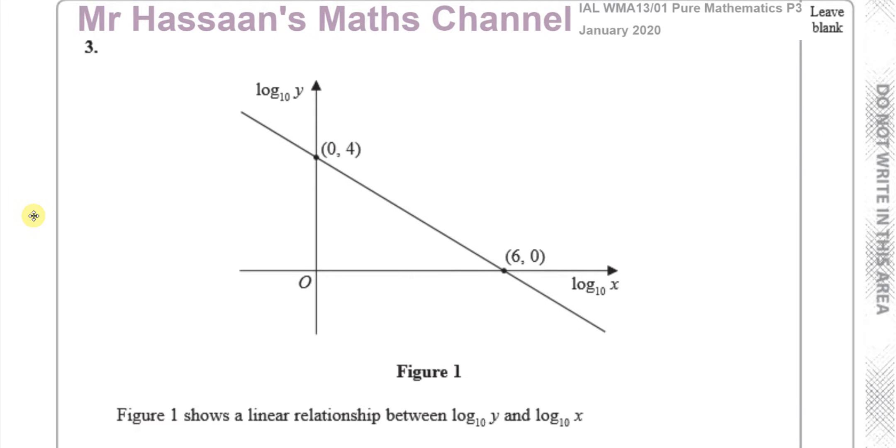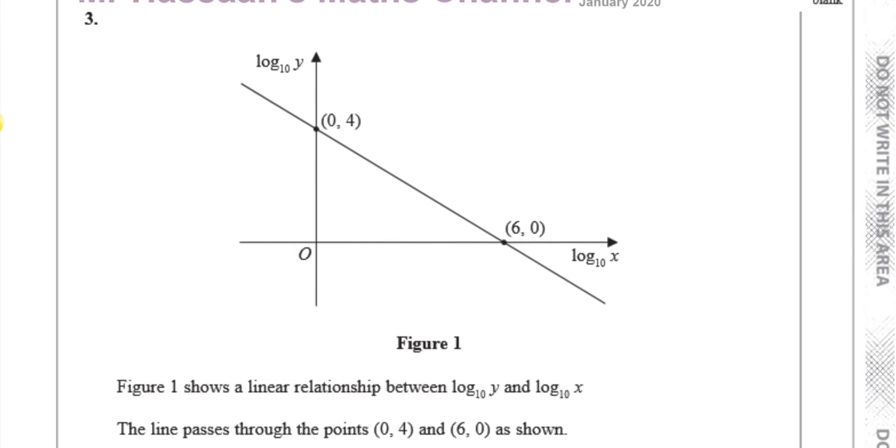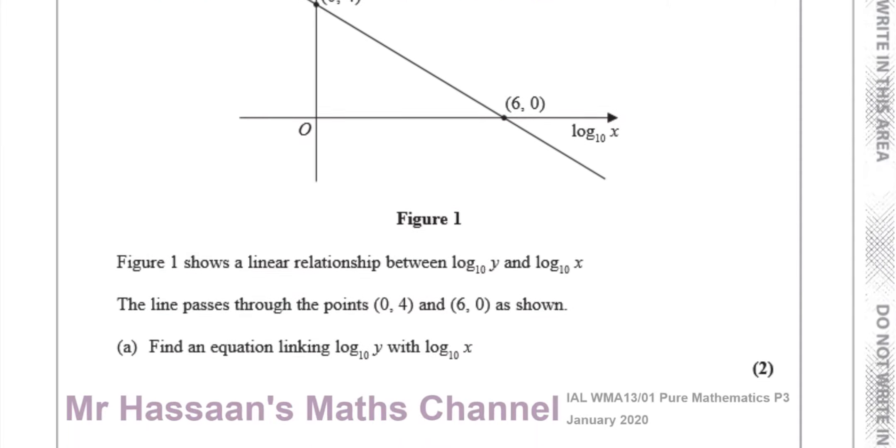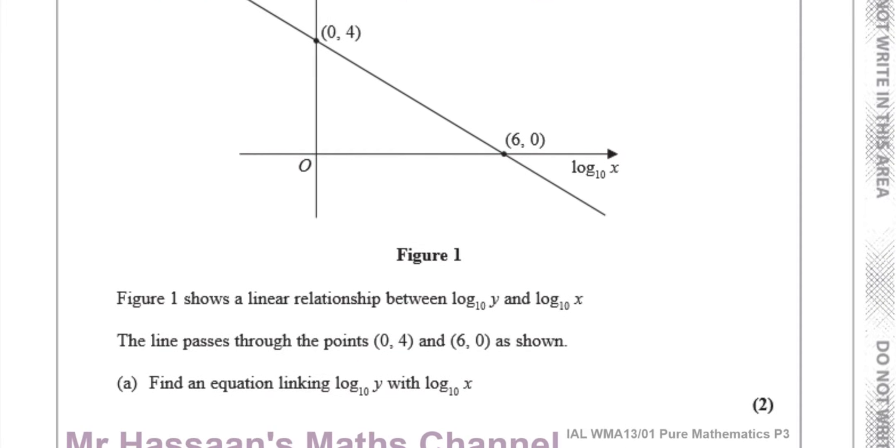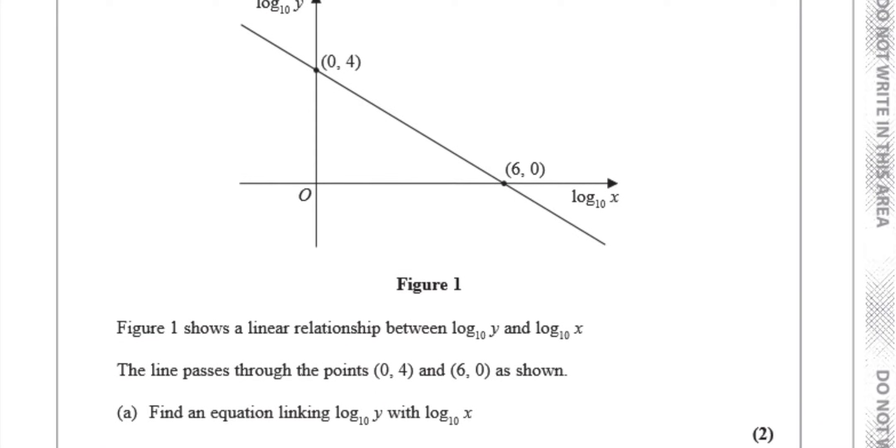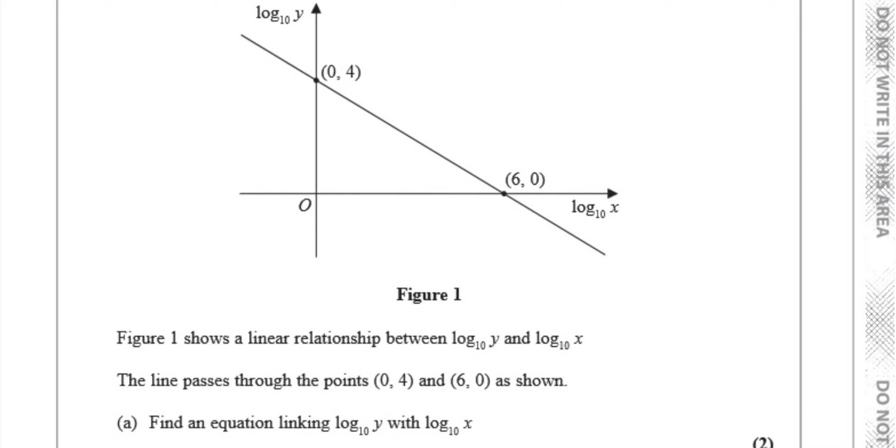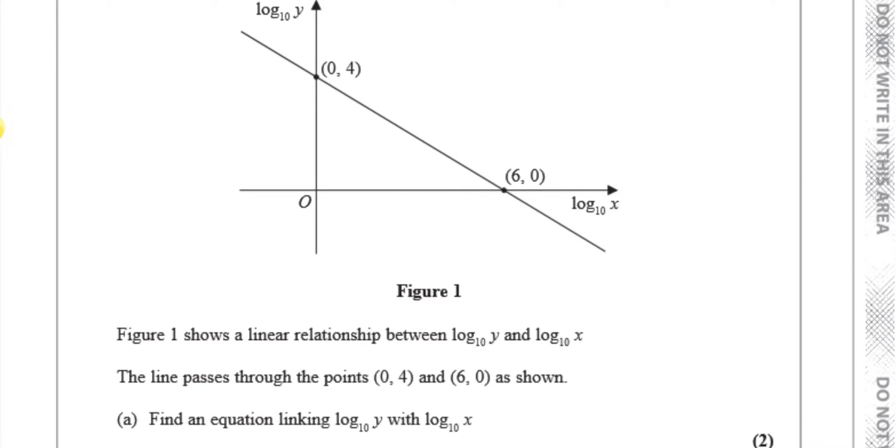Figure one shows a linear relationship between log to the base 10 y and log to the base 10 x. They found the x values of something and the y values of something. Then they've taken the logs of the x values and the y values and they've made a table and plotted the points. And they've got this graph, which gives you a straight line here. It says the line passes through the points (0, 4) and (6, 0) as shown. Find an equation linking log to the base 10 y with log to the base 10 x.